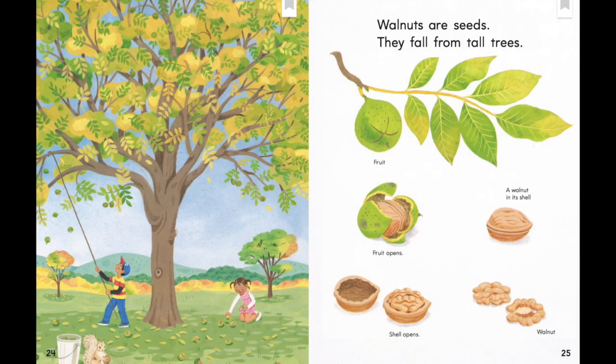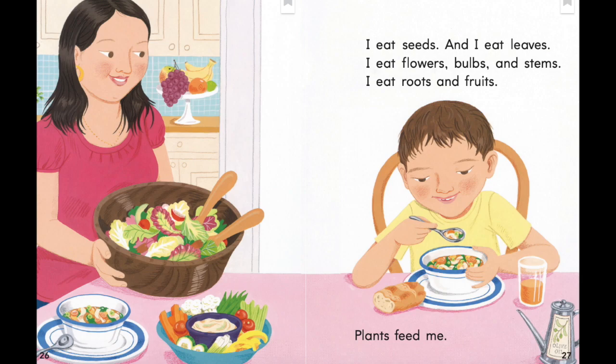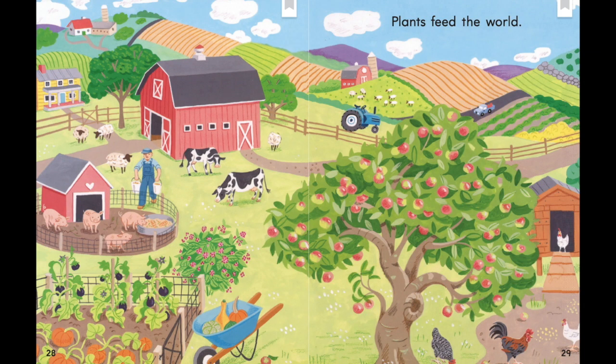Walnuts are seeds — they fall from tall trees. I eat seeds, and I eat leaves. I eat flowers, bulbs, and stems. I eat roots and fruits. Plants feed me. Where do you think all that food on the table comes from? You're right, it comes from plants. Which plants can you identify? Plants feed the world.